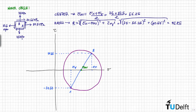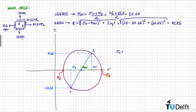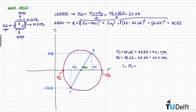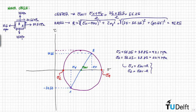The circle shows the planes of the principal stresses: sigma_1 and sigma_2. We know that sigma_1 equals sigma_avg plus the radius, and sigma_2 equals sigma_avg minus the radius. The maximum shear stress, which equals the radius, is 35.85 MPa.